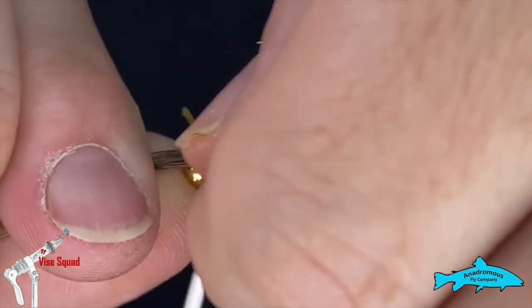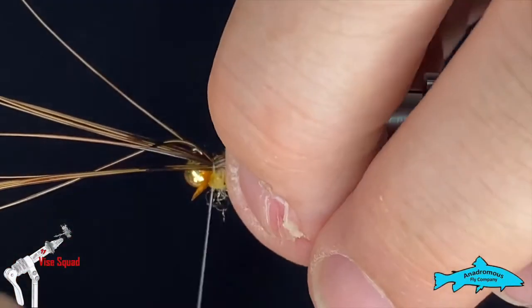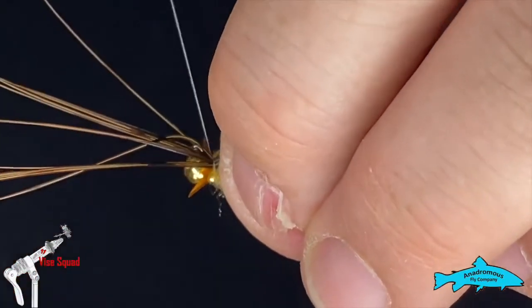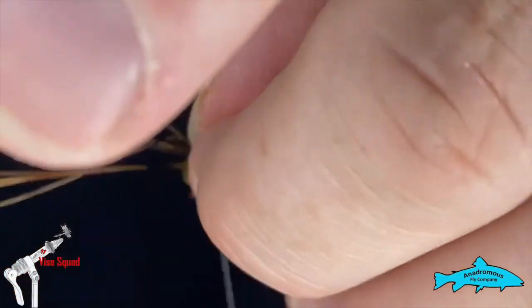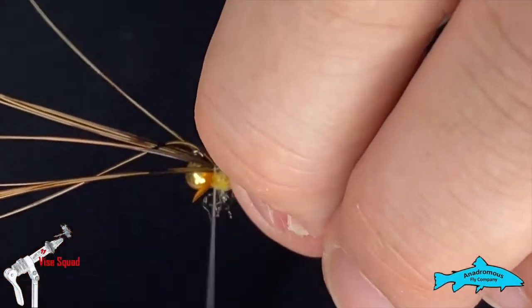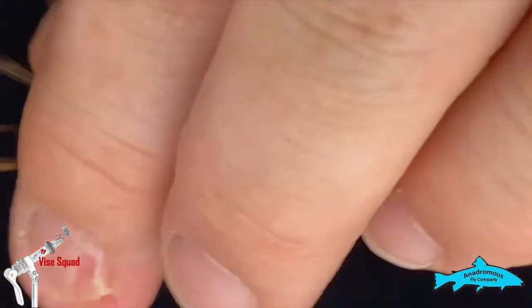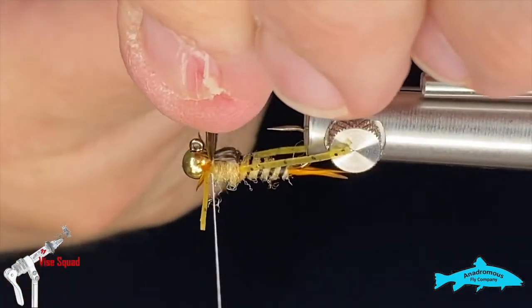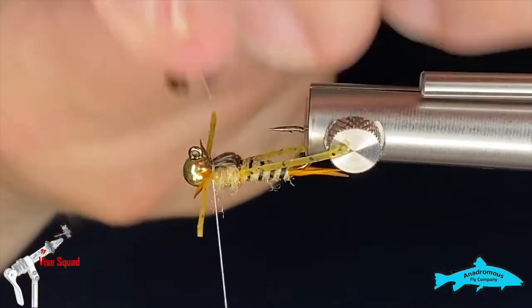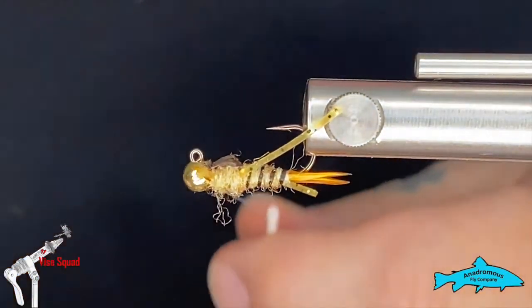Okay, a couple wraps in there. I'll just grab the legs and pull them towards the back. Take a few extra wraps in there and we'll reach in there nice and tight with these scissors, snip those out, and then we can do our whip finish.